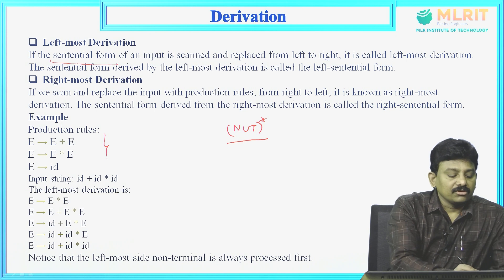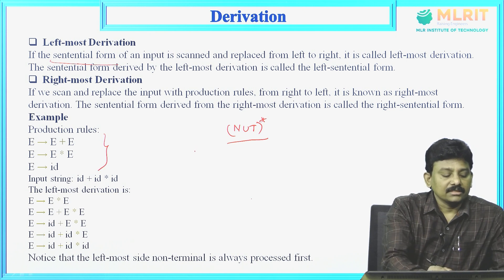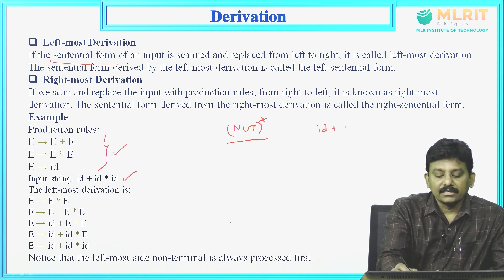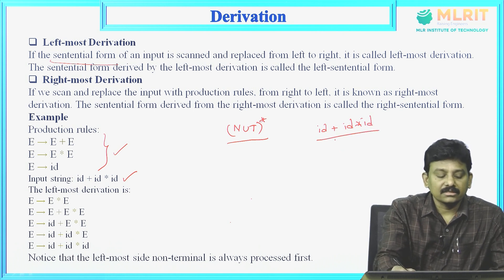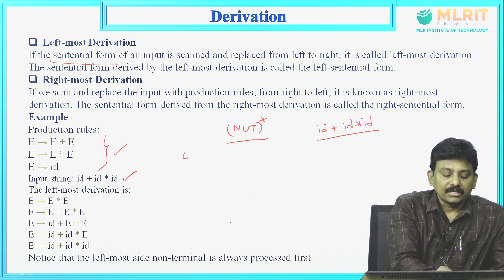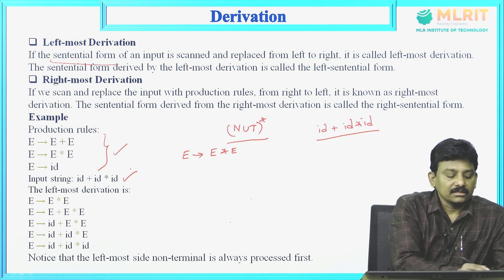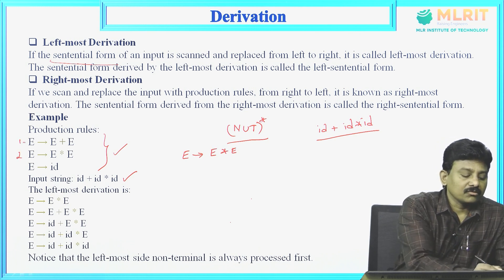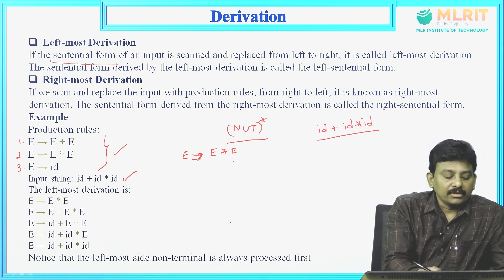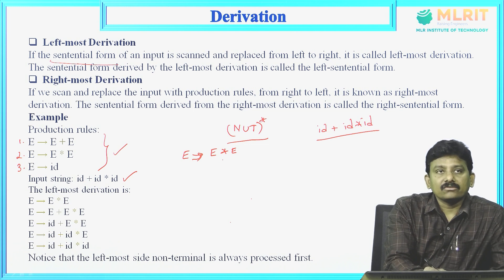The given rules are: E derives E plus E, E derives E star E, E derives id. Three rules are given, and the input string is id plus id star id. We have to derive this string using these rules. So in the derivation, E derives E star E — I have taken rule number 2.